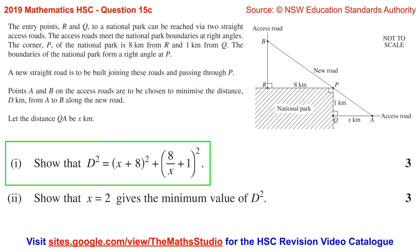Question 15C. The entry points R and Q to a national park can be reached via two straight access roads. The access roads meet the national park boundaries at right angles. The corner P of the national park is eight kilometres from R and one kilometre from Q. The boundaries of the national park form a right angle at P.